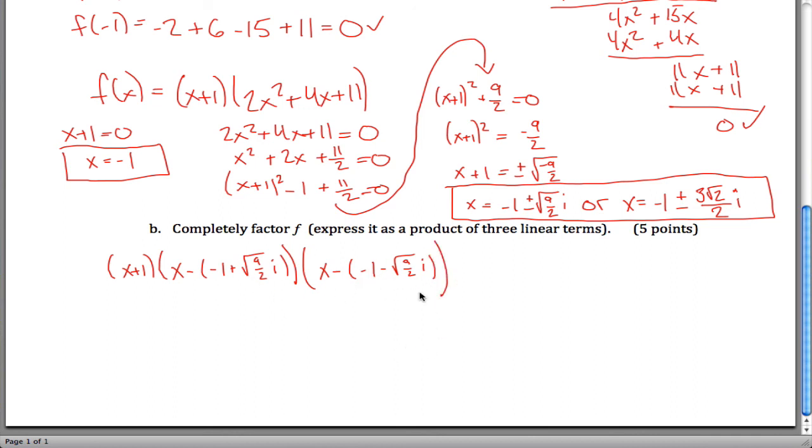Lots of other ways you could write this, but something, maybe I'll write or an equivalent form. So we have our third degree polynomial as a product of 3 linear terms, and we are all done.